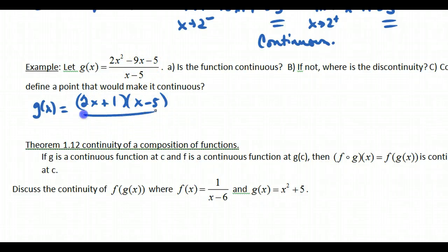And this is x minus 5. They cancel, so I have a hole at x equal to 5. And so this is not continuous, but it's a removable discontinuity. Now what they might ask is, could you define a point that makes it continuous?